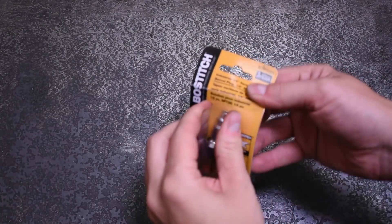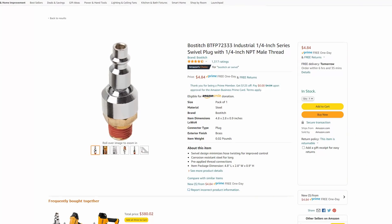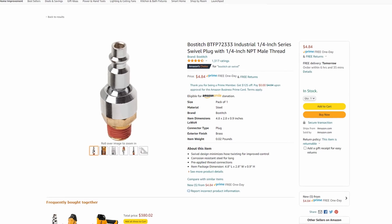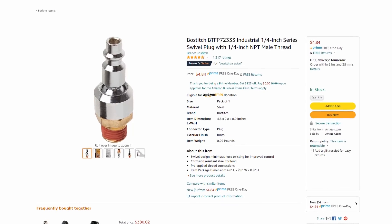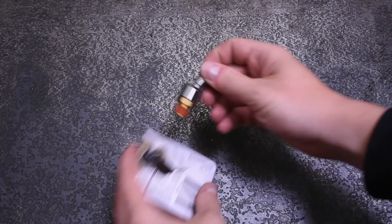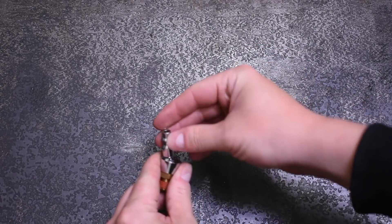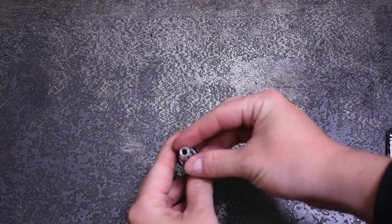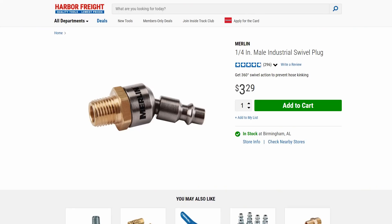That will include this Bostitch BTFP72333 which was $4.84 and seems to be the best-selling model on Amazon. It's an M style industrial type quarter inch NPT fitting with thread sealing from the factory. Then we got Harbor Freight's version from their Merlin line, part number 63542, appears to be the same as the Bostitch, same M industrial type fitting but a different color and no thread sealer. This was $3.29.